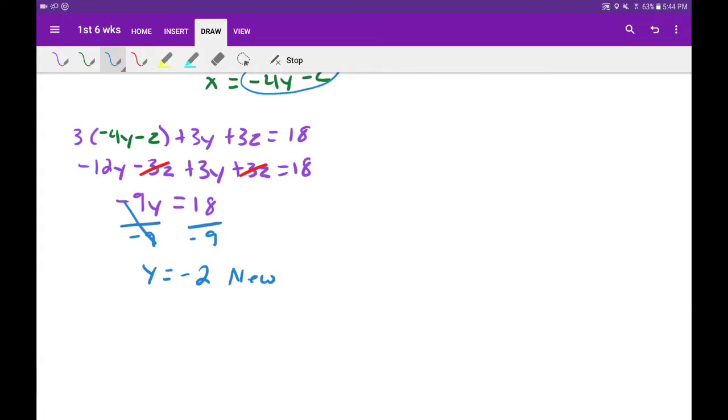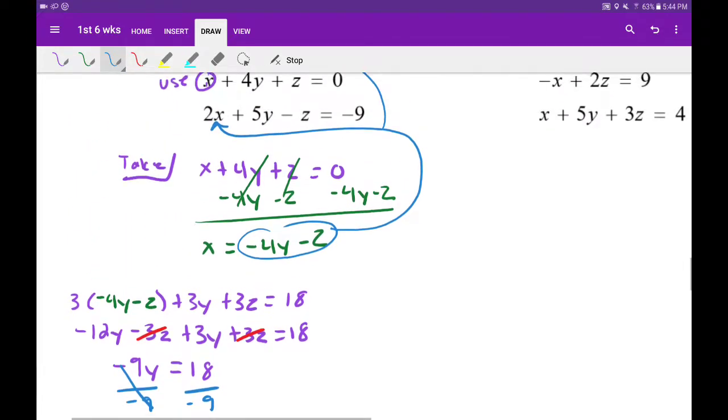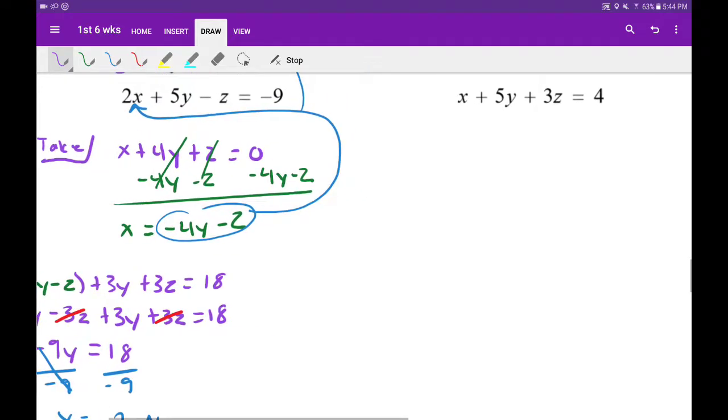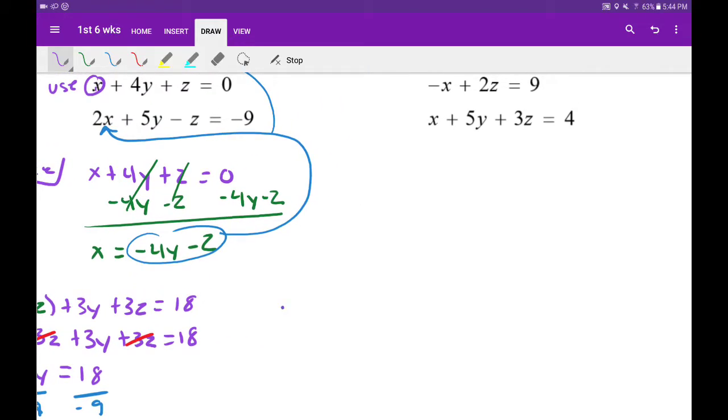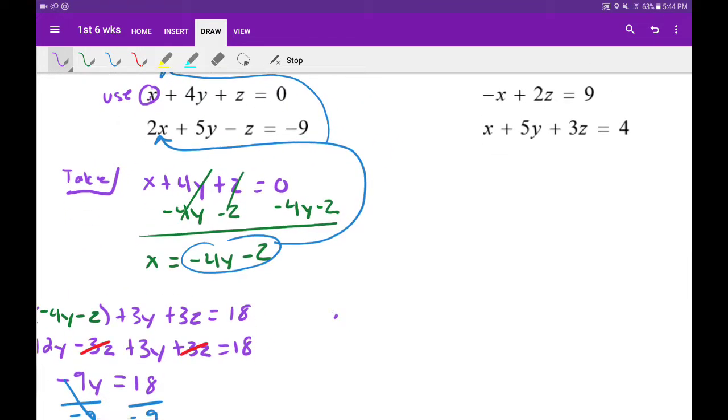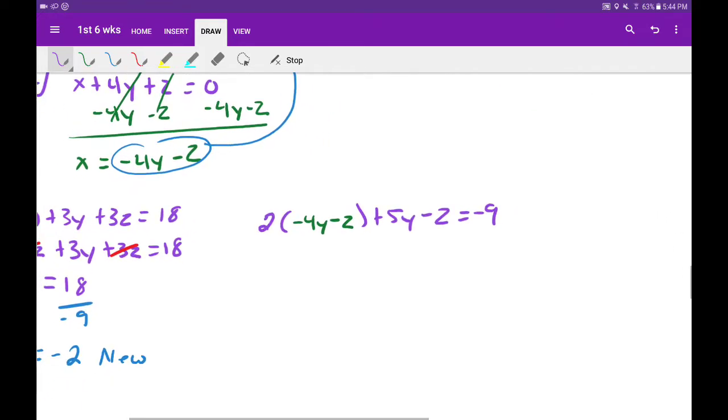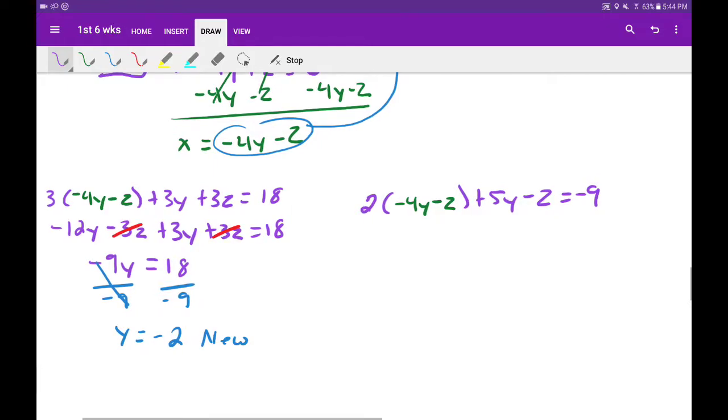Next thing we're going to do is the bottom equation and try to condense that one. So you got 2 times, again, the expression here, negative 4y minus z, plus 5y minus z equals negative 9. Distribute that 2 in. So we're going to get negative 8y minus 2z plus 5y minus z equals negative 9.